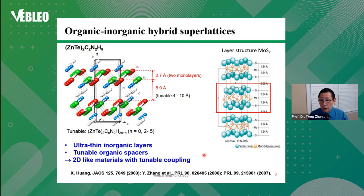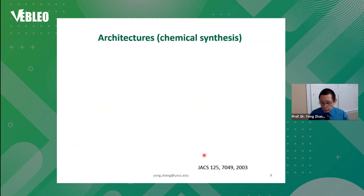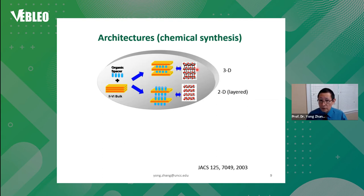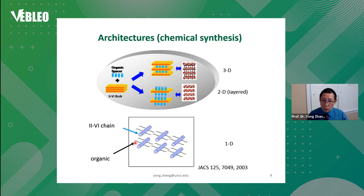For many applications you want to have enough volume — for instance, for optical absorption. These materials are made starting with a thin slab of one or two monolayers of inorganic connected with an organic molecule. Depending on the bonding, you find either a more covalent type of bonding giving a 3D superlattice structure, or a coordinate bonding giving a more layered structure. You can also take one atomic chain of 2-6 material, coordinate it with a molecule, and form a 1D array.